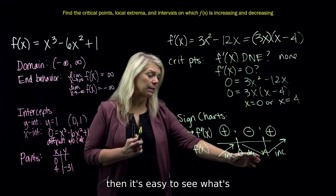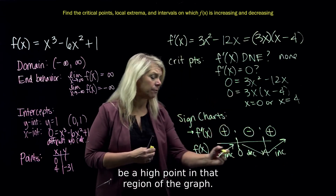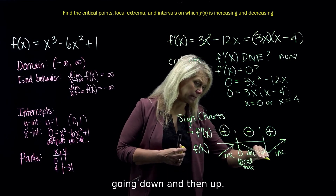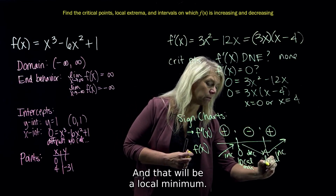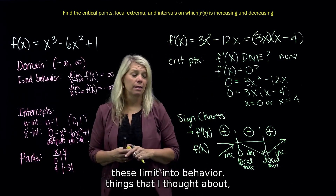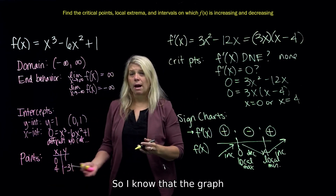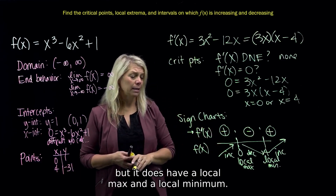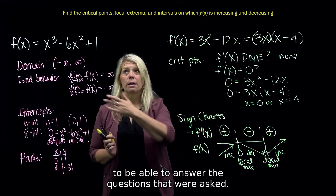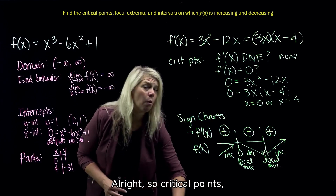Visualizing the sign pattern — increasing, then decreasing, then increasing — it's easy to see what happens at the critical points. At x = 0 the function goes up then down, so that's a local maximum. At x = 4 the function goes down then up, so that's a local minimum. These are not absolute extrema because the end behavior shows the graph goes up forever on the right and down forever on the left.